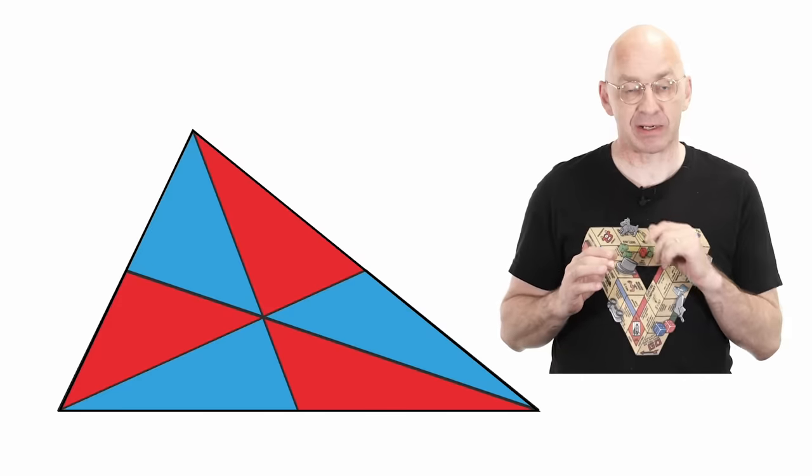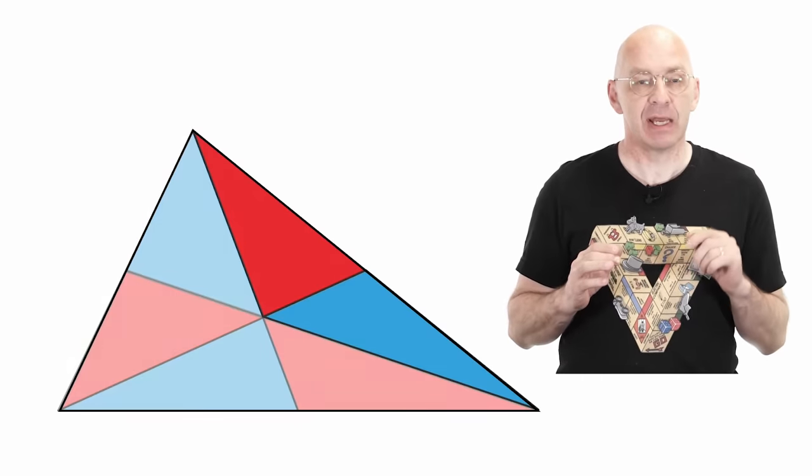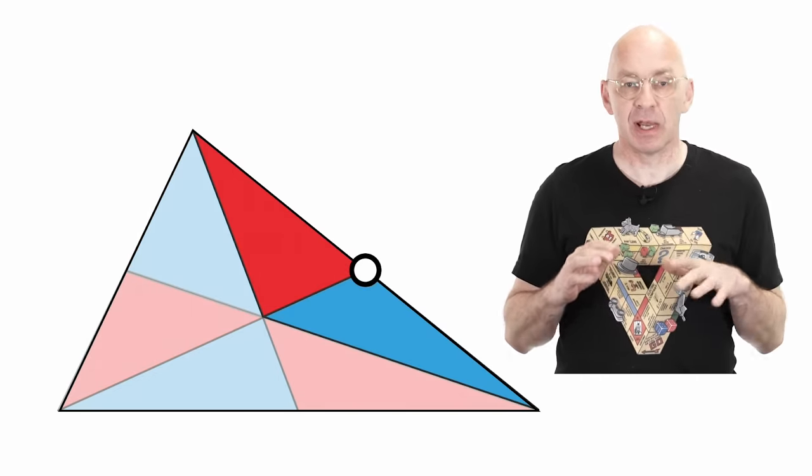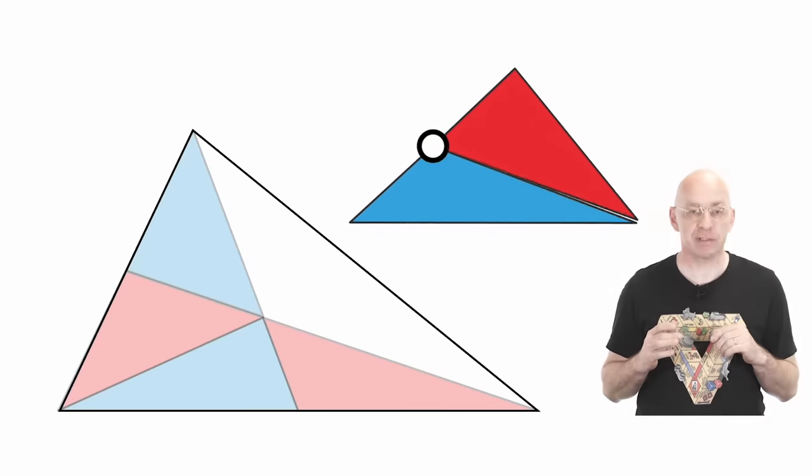highlight two neighboring triangles, those two. Insert a hinge right there at that midpoint. And now fold up. Alright, nice.